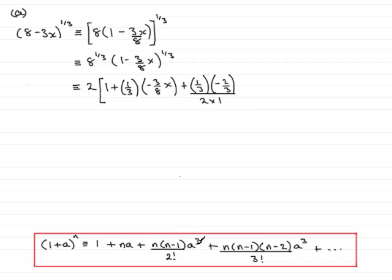Then we have a squared, so that would be minus 3 eighths x all squared. So I put that in there, minus 3 eighths x all squared.